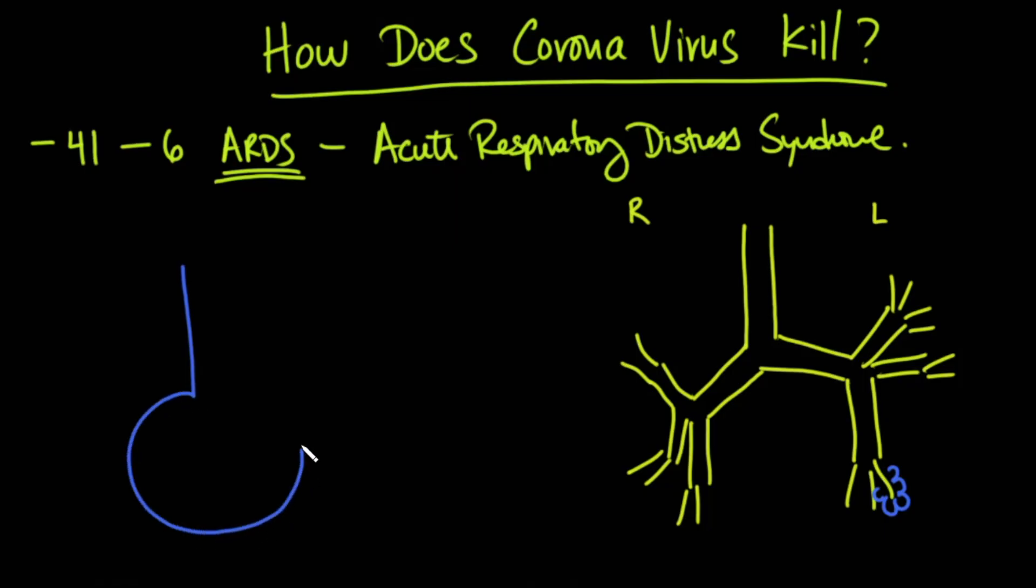How many alveoli are there in the human body? Well, there's about 600 million of them. These are very, very small.